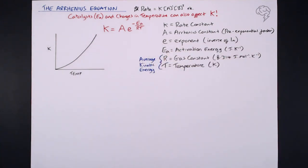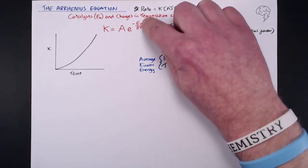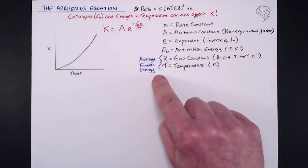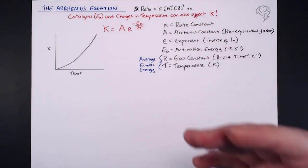We know from looking at Maxwell-Boltzmann distribution curves that the higher the temperature, the more kinetic energy our molecules have. The more kinetic energy they have, the more collisions you get, the more frequent the collisions, and the more successful the collisions. So putting R and T together is really important because we can find our average kinetic energy. The greater the average kinetic energy, the faster the rate of reaction. So we've got our Ea — we want that to be low for a fast rate — and our average kinetic energy — we want that to be high.